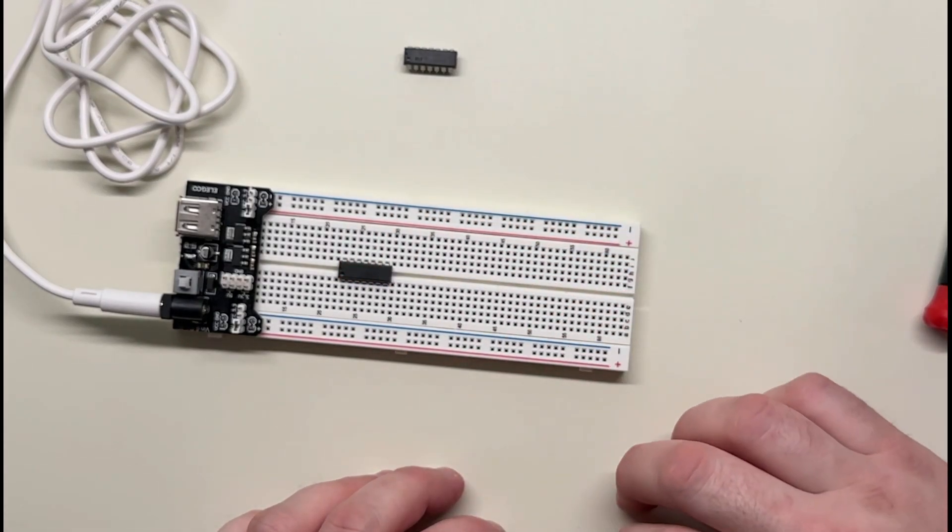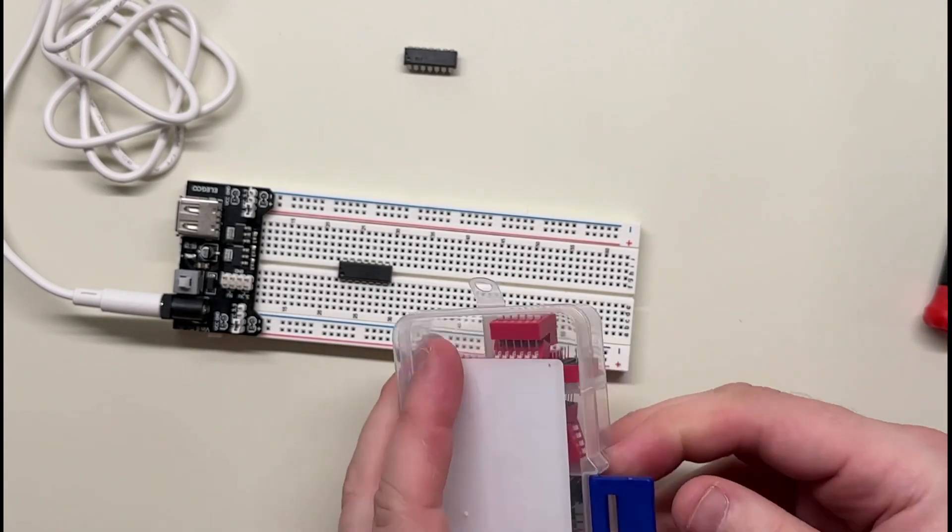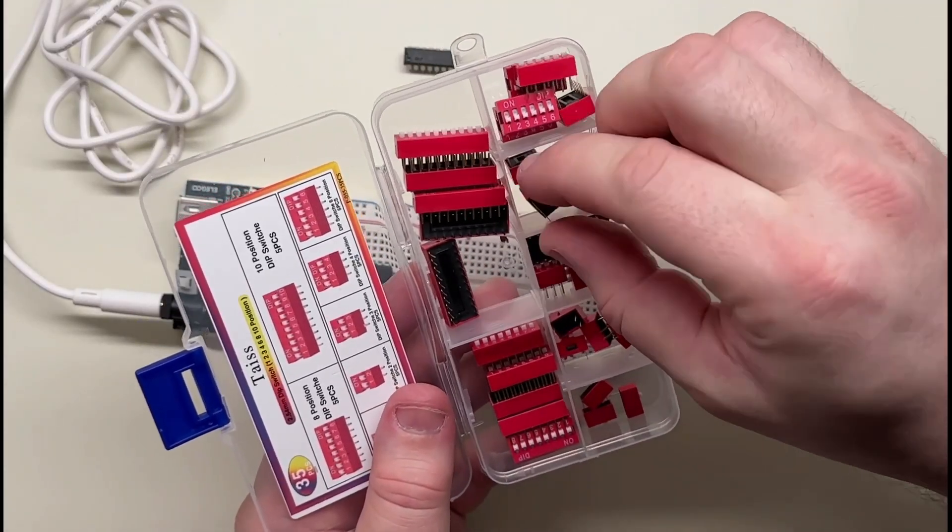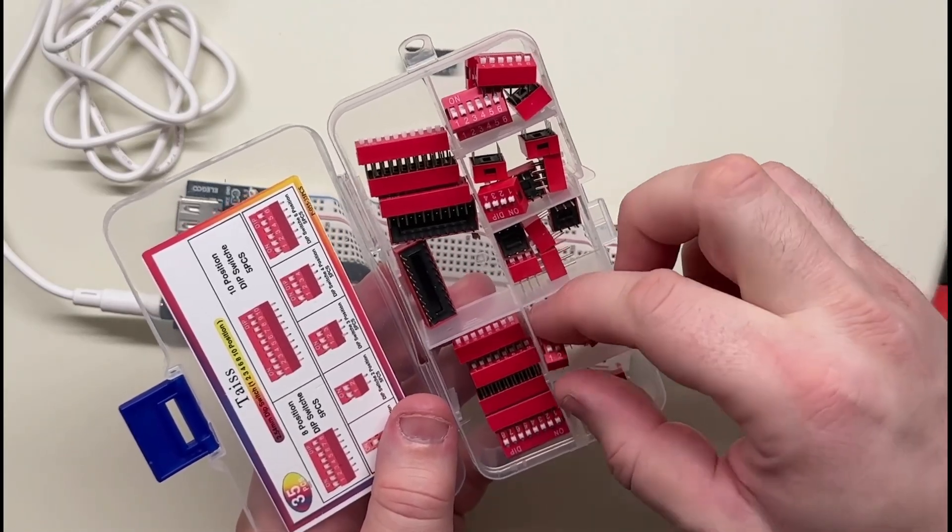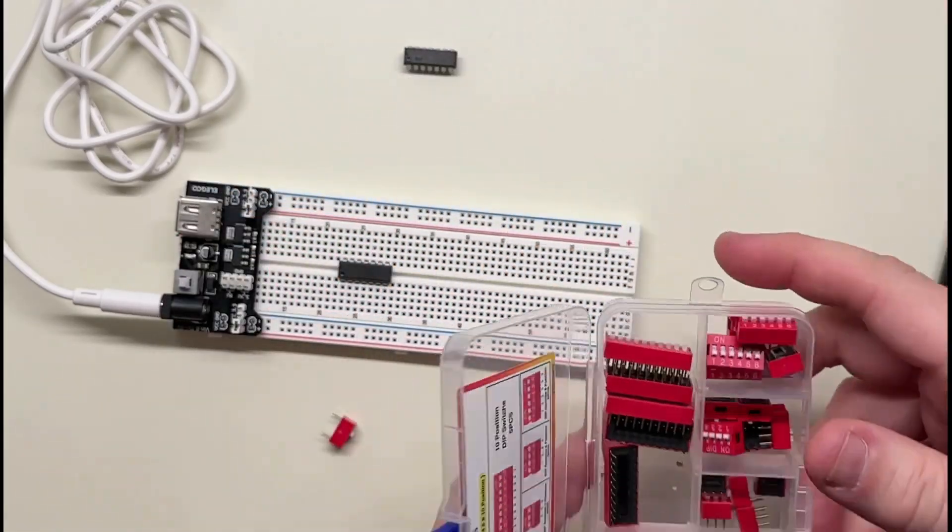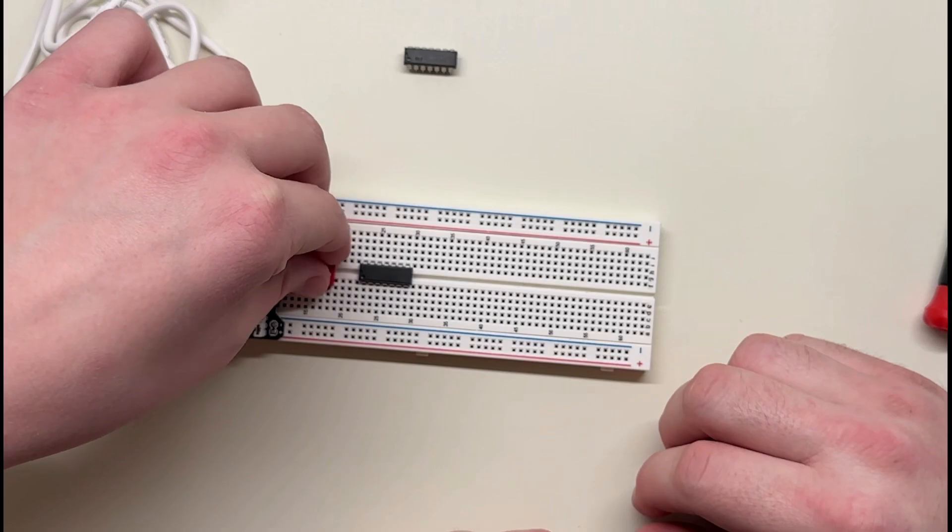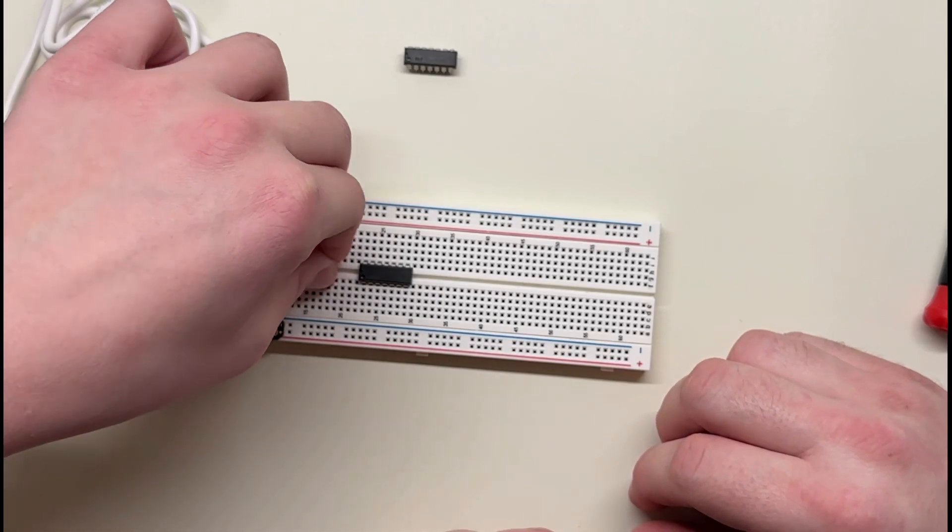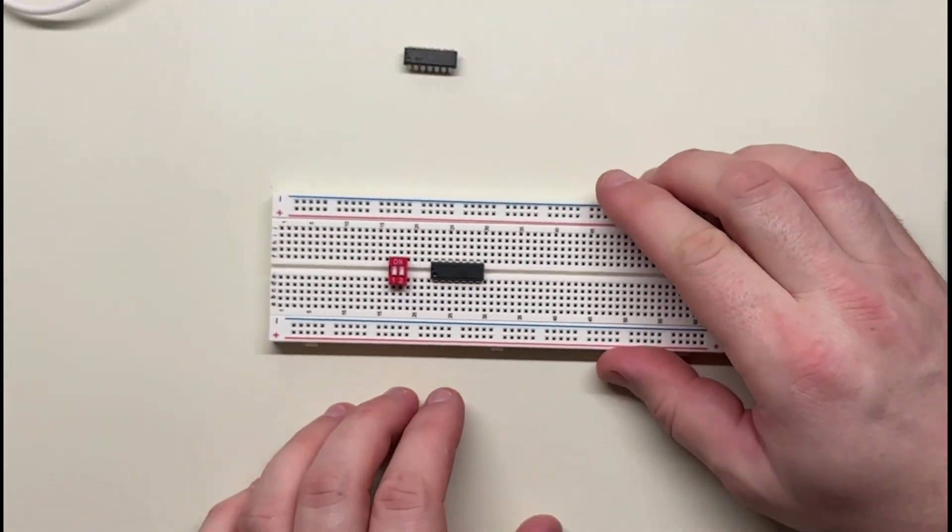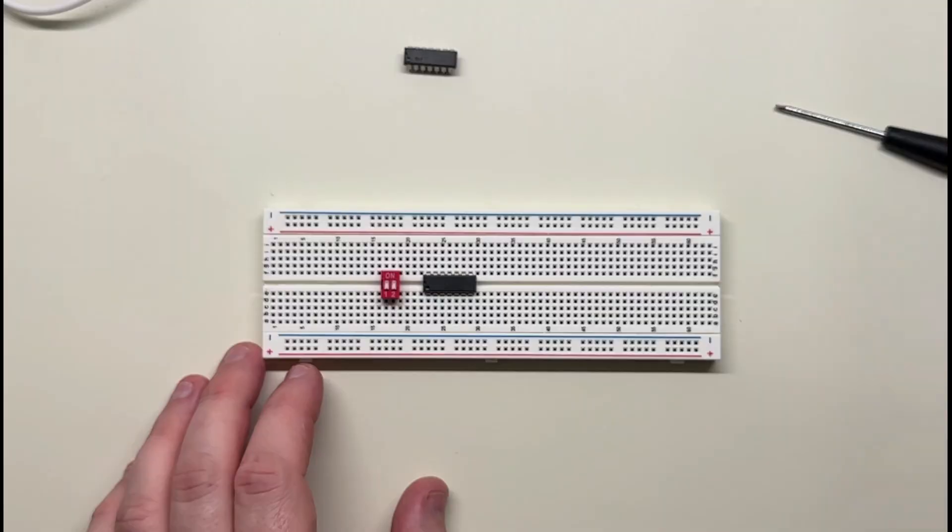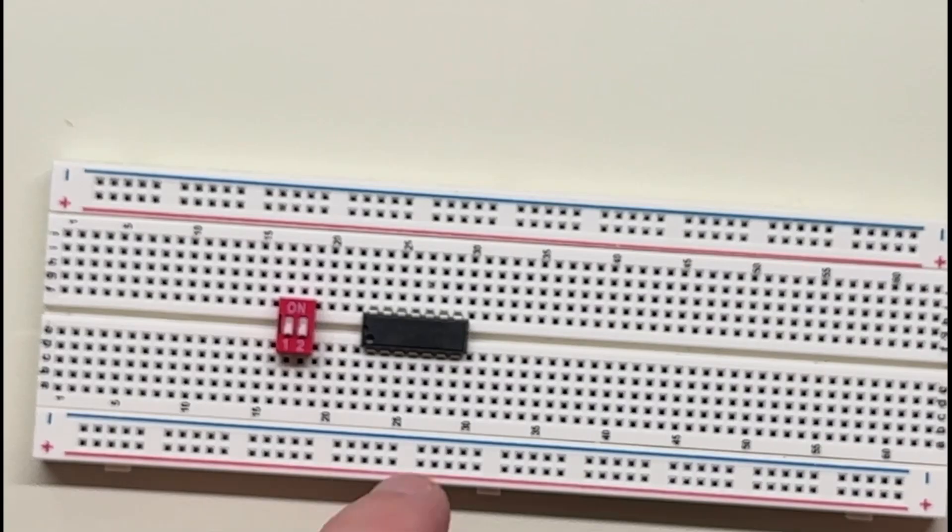We will also need an input. So we have these little switches. Let's use one of these, maybe. We should do a two. Oh, a two-bit input? Okay. Where do you want to put that at? I want it to be right here. Okay. How about we take this off while we're working on it, just so there's more space. Okay, we'll zoom in a little bit. Maybe that'll be easier to see.